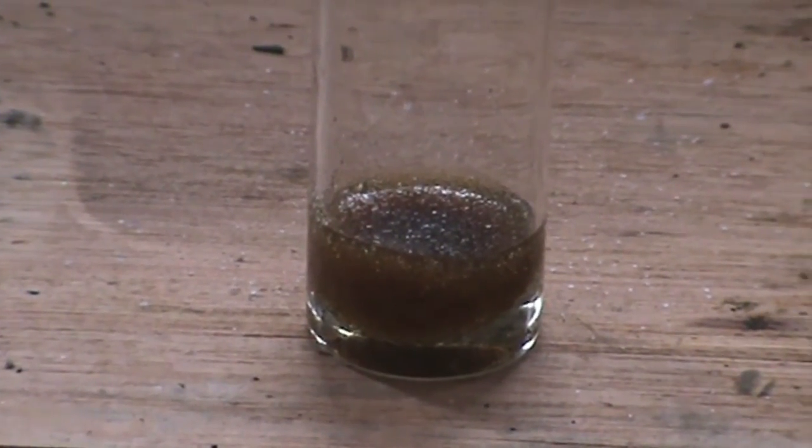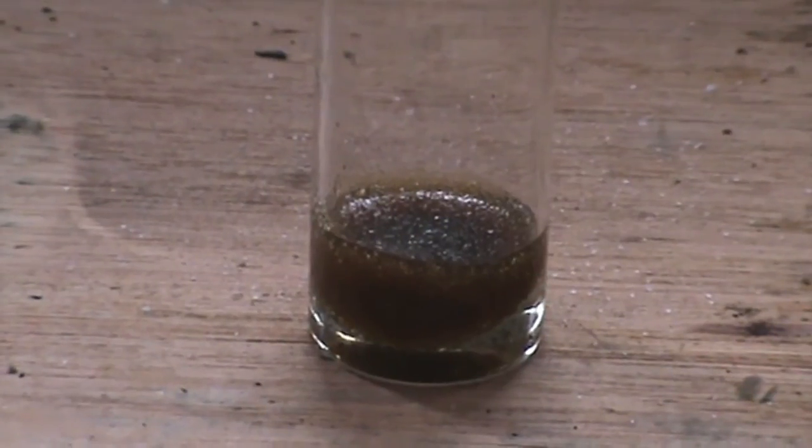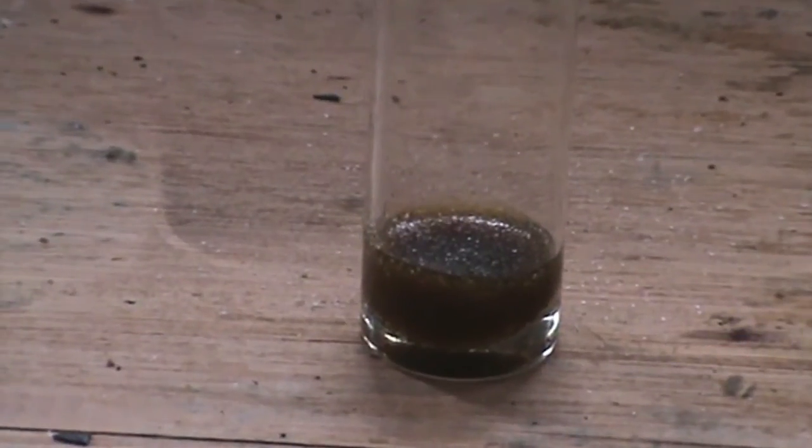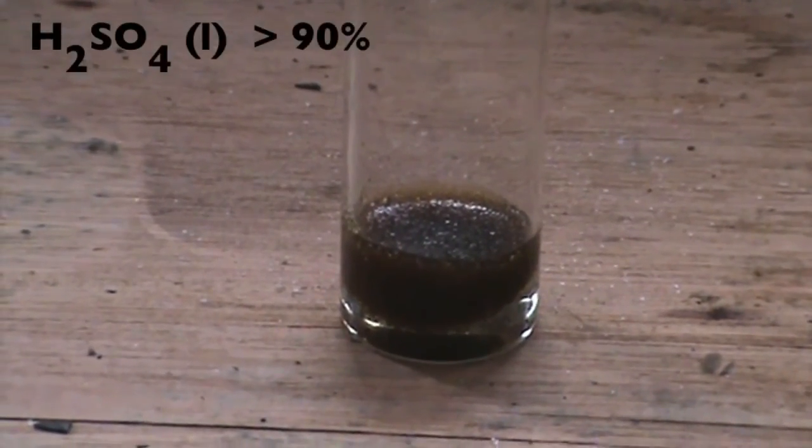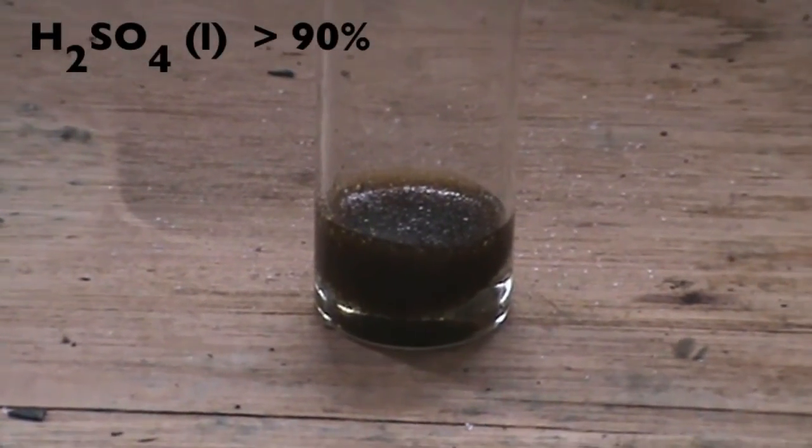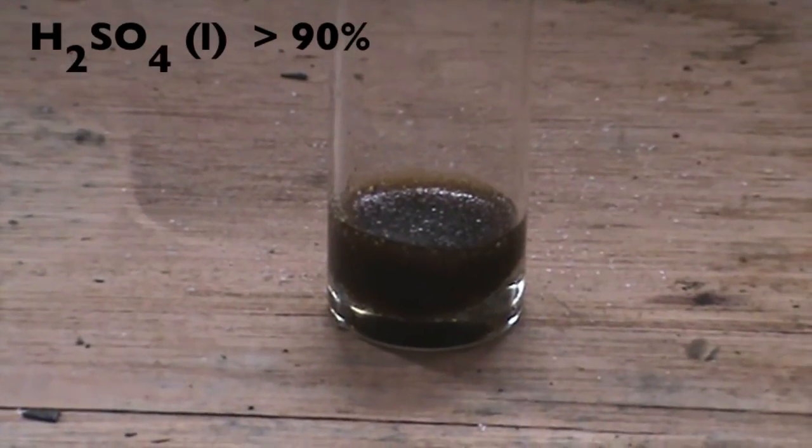As we can see, the sugar turns black. This happens because the concentrated sulfuric acid dehydrates the sugar, turning it into carbon. From this experiment, we can conclude that we were able to concentrate the sulfuric acid to more than 90%.